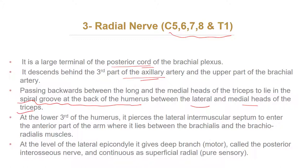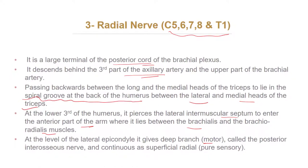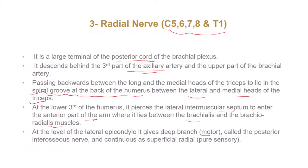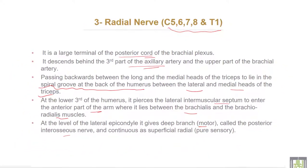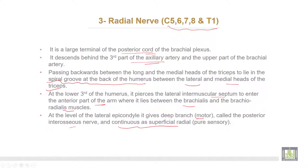At the lower third of the humerus, it pierces the lateral intermuscular septum to enter the anterior part of the arm, where it lies between the brachialis and brachioradialis muscles. At the level of the lateral epicondyle, it gives a deep branch which is motor, called the posterior interosseous nerve, and continues as the superficial radial, which is a pure sensory nerve.